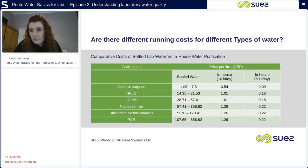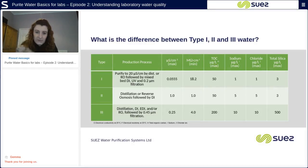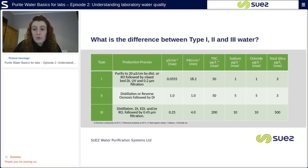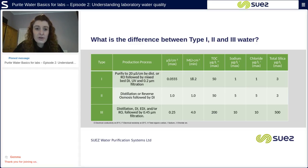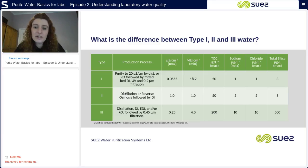Going back to the slide on type one, type two, and type three water, you can see that to produce purer water such as type one ultra pure water, more components are used in the purification process. The more components in a water system, generally the more consumables have to be changed. We will be covering how to maintain a water system and the importance of changing consumables and calculating running costs in a subsequent episode.